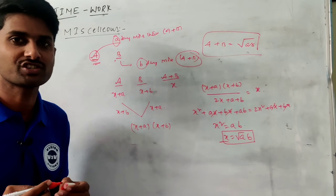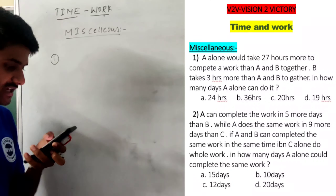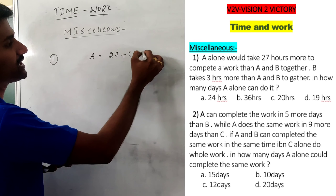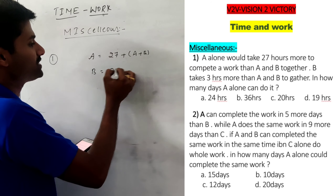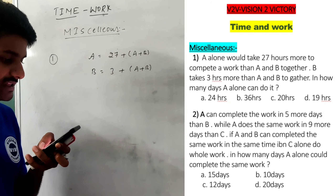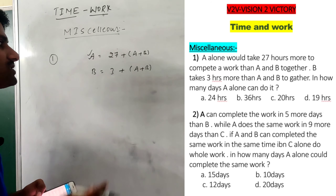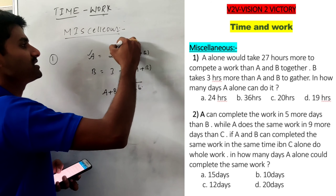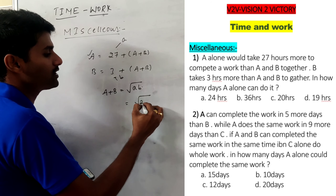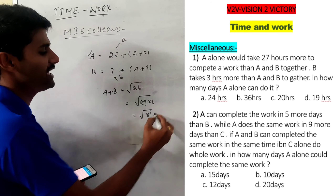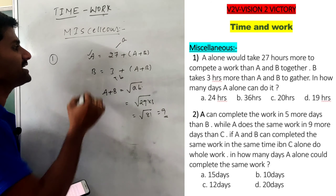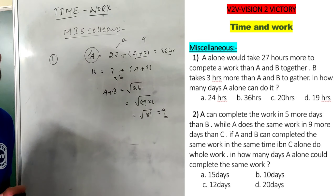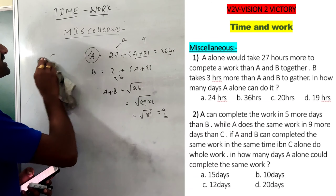Let's see question 1. A alone would take 27 hours more than A and B together, and B takes 3 hours more than A and B working together. How many hours can A alone do it? Using our formula, A+B together = √(27 × 3) = √81 = 9 hours. So A alone takes 9 + 27 = 36 hours. This is a direct application — no quadratic equations needed.